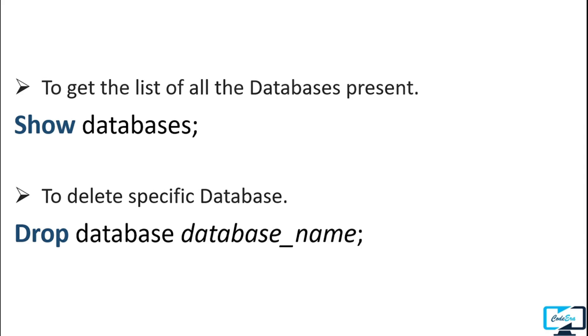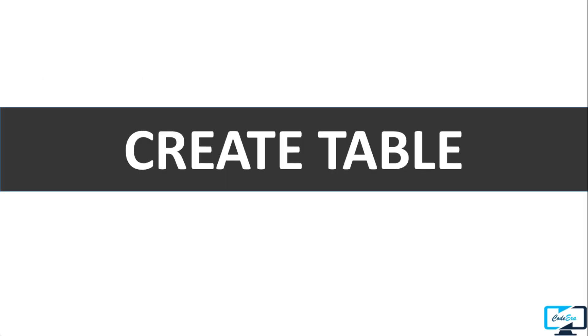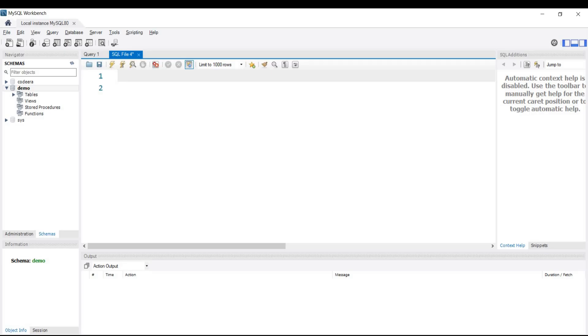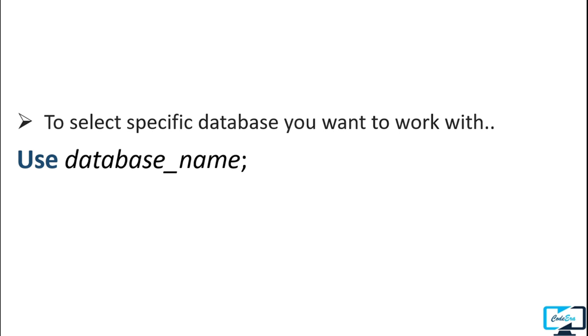After creating a database, we will create a table — but before that we have to select a database in which we want to create the table. Since a database management system can have more than one database, we must select one before working with it. For this we use the USE command: write USE followed by the database name. Our query is: USE codera. After executing, you can see our database is highlighted in the schema section, meaning Codera is now the active database.